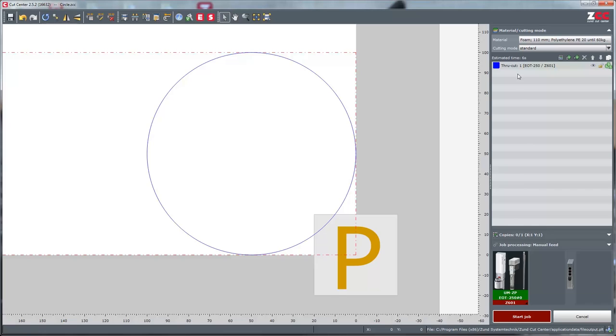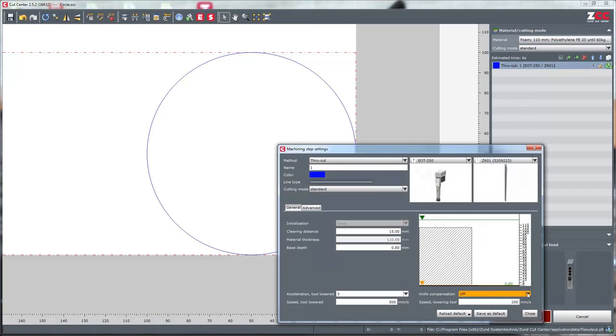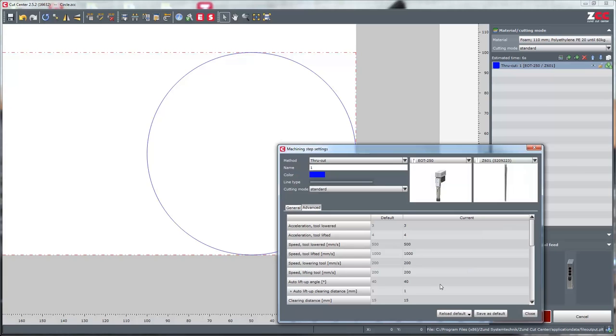To compensate for this effect, settings are available in SündCAD Center under Machining Step Settings, General and Advanced. The selected value should be tested before proceeding.